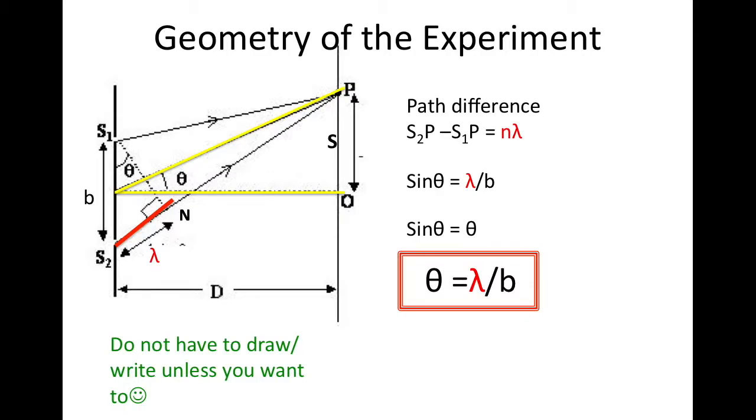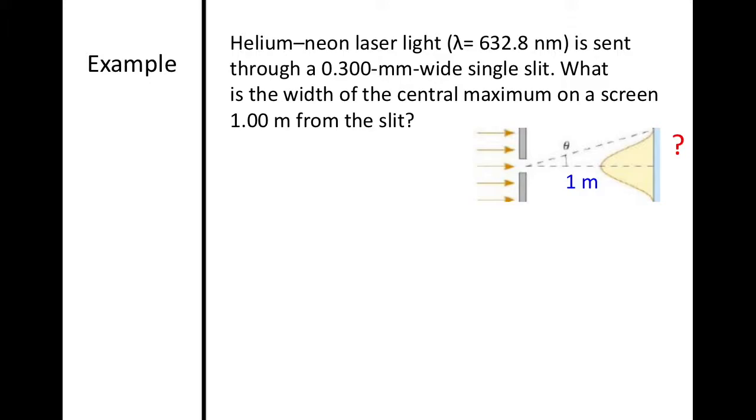You can use this equation to solve single slit diffraction problems. Let's do one. Here we have an example of a helium neon laser light with a wavelength of 632.8 nanometers, and this is being sent through a 0.300 millimeter wide single slit. What is the width of the central maximum on a screen one meter from the slit? So we want to know what the width of this entire portion right here is. Go ahead and try to solve this and then start the video back up.